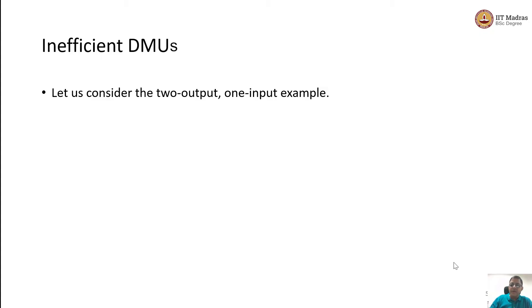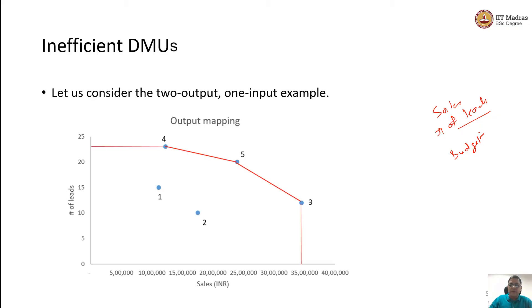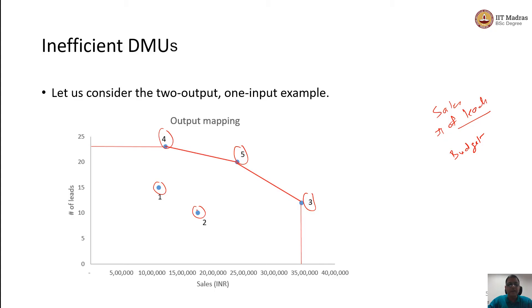We had seen this example earlier. There were five DMUs which had two outputs: sales and the number of leads. Those were the two outputs and the input was the budget. Everybody was given the same budget of 2 lakhs for every DMU, and we saw using this budget how much sales they are able to generate and how many leads they are able to generate. Three DMUs turned out to be efficient: DMU 3, DMU 4, and DMU 5. The focus of this session is on DMUs 1 and 2, which are not efficient because they are not sitting on the efficiency frontier.